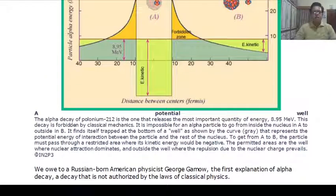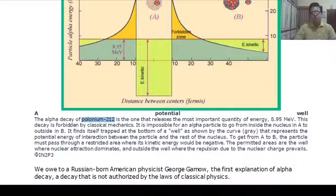Here in this figure, the alpha decay of polonium-212 is shown and explained. This decay is forbidden by classical mechanics. It is impossible for an alpha particle to go from inside the nucleus at point A to outside at point B. It finds itself trapped at the bottom of a well, as shown by the curve, that represents the potential energy of interaction between the particle and the rest of the nucleus. To get from A to B, the particle must pass through a restricted area where its kinetic energy would be negative.